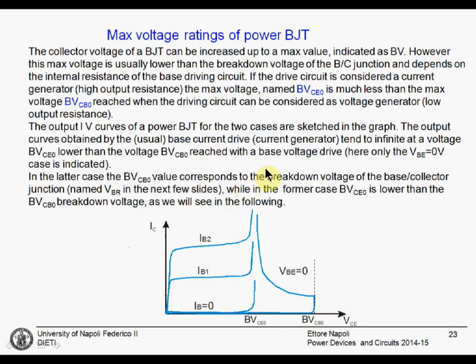This means that the output IV curve for the two cases are those that are sketched in this plot here. Here we have the output curves with the usual current drive. For IB equals 0, IB1 that is larger than 0, IB2. Since we are driving the device with the current generator with a very high internal resistance, this curve will reach a breakdown that is BVCE0.